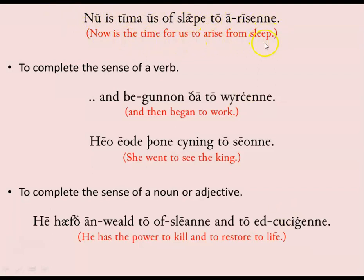Now is the time for us to arise from sleep — in Old English the infinitive goes to the very end. We can also use this infinitive construction to complete the sense of a verb: 'and begann tō wyrċenne' — and then began to work. 'Hēo ēode þone cyning tō sēonne' — she went to see the king. The 'tō sēonne' on the end makes clear what the point of her going was — it completes the sense of the verb.